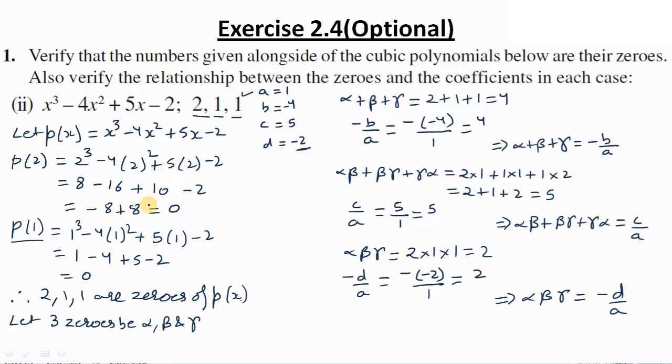Both verifications are complete — the given numbers are zeros and all three coefficient relationships hold true. Hence verified.